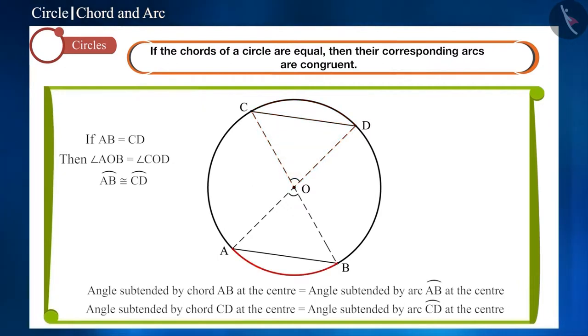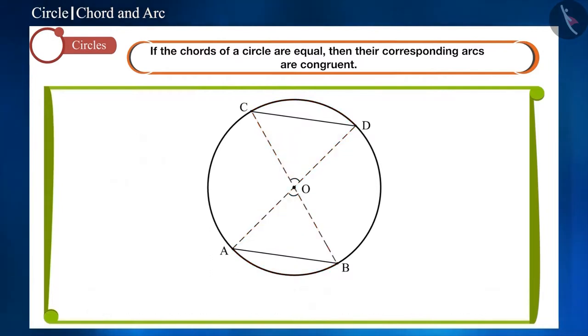Therefore, the angles subtended by arc AB and arc CD at the center are angles AOB and COD respectively. Therefore, we can say that congruent arcs of a circle subtend equal angles at the center.